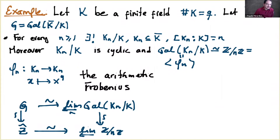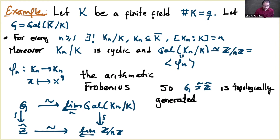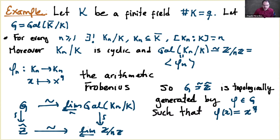This is a very explicit situation — a solution to the inverse Galois problem in this case. Given ℤ-hat as a group, we have shown it is in fact a Galois group and identified which Galois group it is. The group G is isomorphic to ℤ-hat and is topologically generated by the Frobenius automorphism φ: x ↦ x^q.